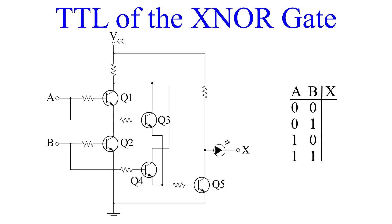Our last TTL schematic is that of the XNOR gate. If you look closely at this schematic, what we have done is essentially connected an inverter to the XOR TTL. With VCC on and inputs A and B both 0, none of the transistors are biased. The only path for current to flow is through our indicator LED. So for inputs A and B both equal to 0, the output is 1.